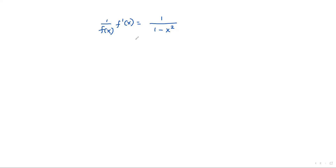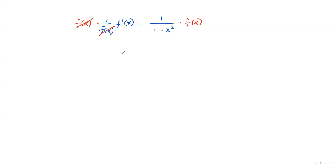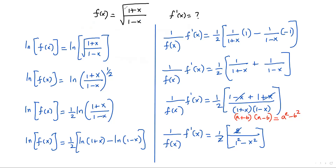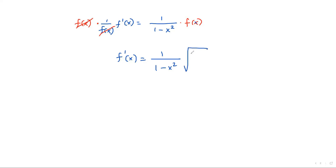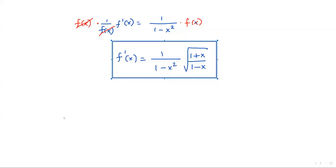Now solving for f'(x): multiplying both sides by f(x), the f(x) terms cancel on the left, giving f'(x) = 1/(1−x²) · f(x). Substituting the original function f(x) = √((1+x)/(1−x)), the final answer is: f'(x) = (1/(1−x²)) · √((1+x)/(1−x)).